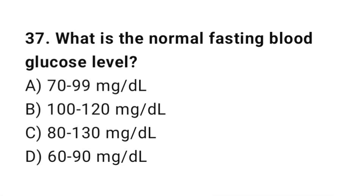Question number 37: What is the normal fasting blood glucose level? The correct answer is A, 70 to 99 milligrams per deciliter.